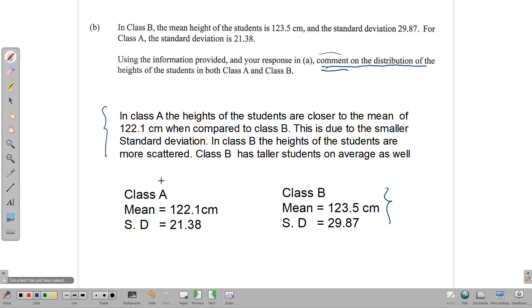But the comment that we can make is something like this. Because what the standard deviation tells us is how closely or how far the numbers are from the mean within the data set. So in class A, the heights of the students are closer to the mean, given that the mean here, the standard deviation here is smaller than that one. So you would expect that these numbers are further spread than in this one. So in class A, the heights of the students are closer to 122.1 centimeters than in class B, where you have 123.5 centimeters.